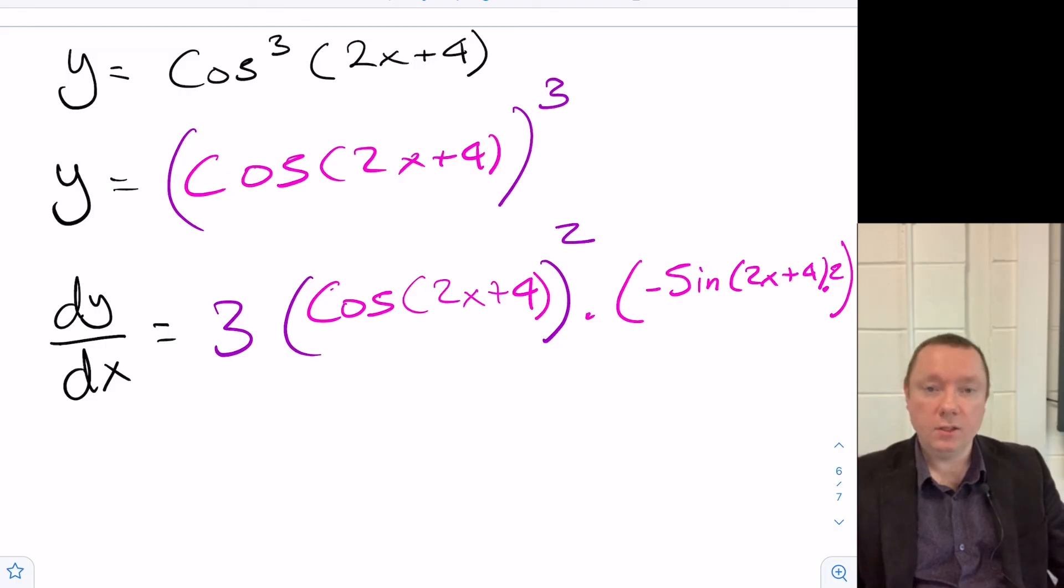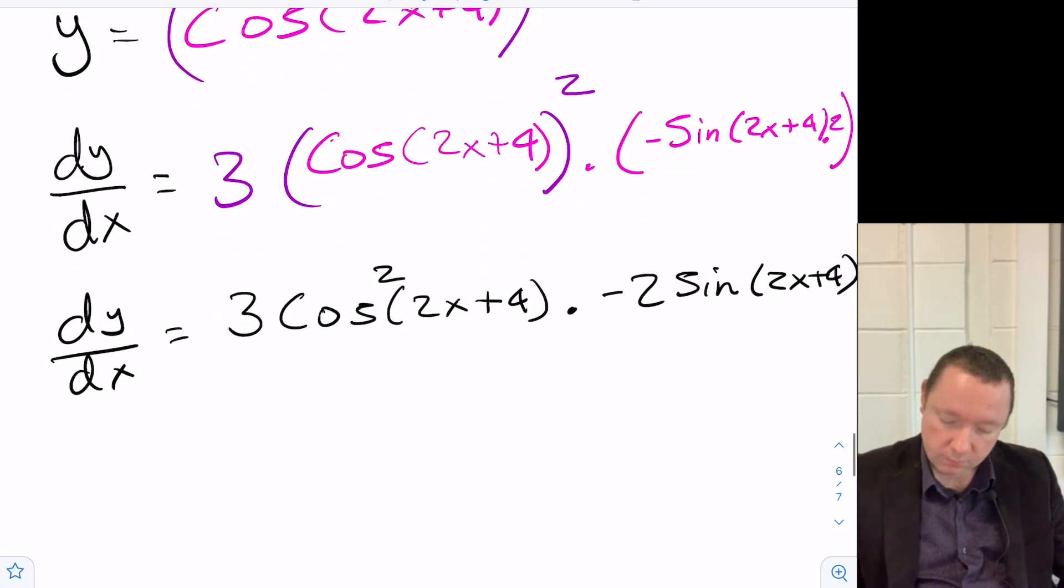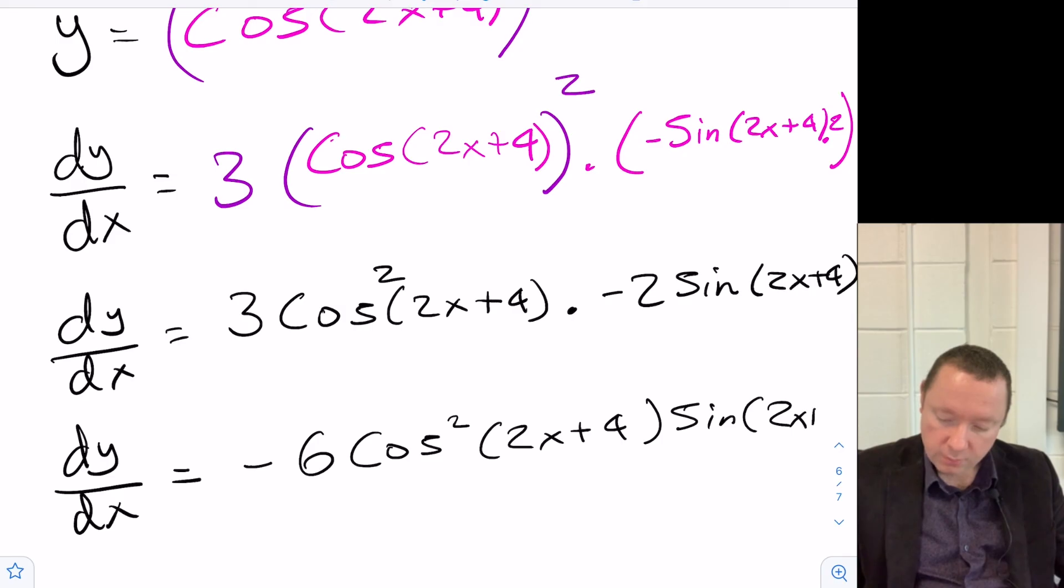So I've had to use the chain rule twice again there. Tidying that up. dy/dx, we've got 3 [cos(2x plus 4)] squared times minus 2 sin(2x plus 4). So dy/dx, 3 times 2 is 6. So minus 6 cos squared (2x plus 4) sin(2x plus 4).